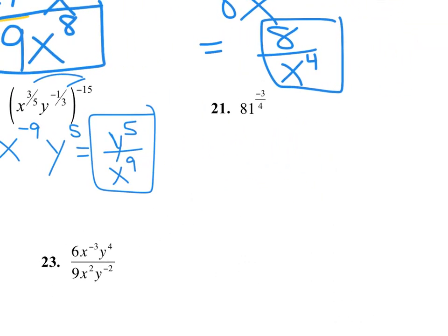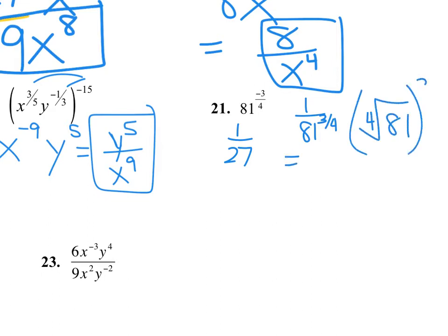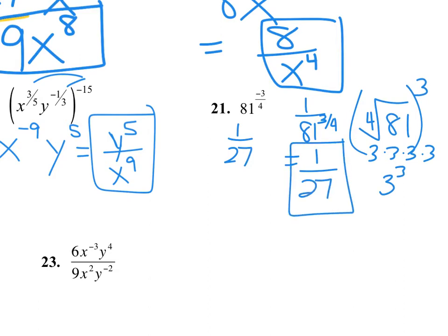Number 21: if you put this into your calculator, it gives a gross decimal — 0.037 repeating — which is actually a fraction: 1 over 27. Here's how: we have a negative exponent, so first drop it down. Then take the fourth root of 81 and cube that number. The fourth root of 81 is 3, because 3 times 3 times 3 times 3 is 81. Then 3 cubed is 27, so the answer is 1 over 27.